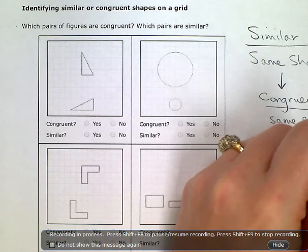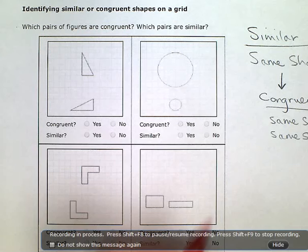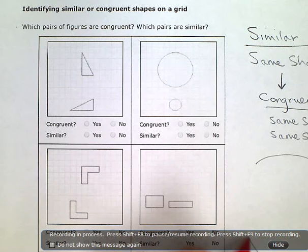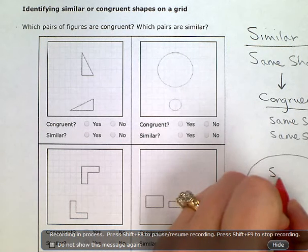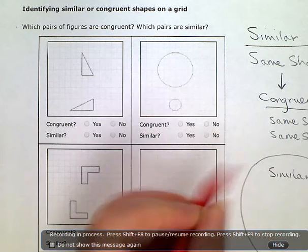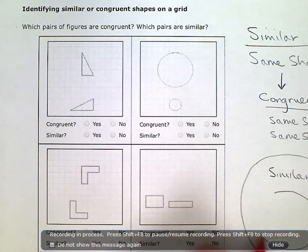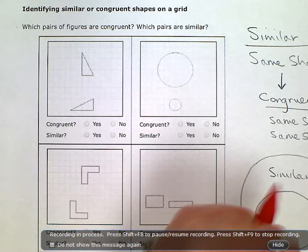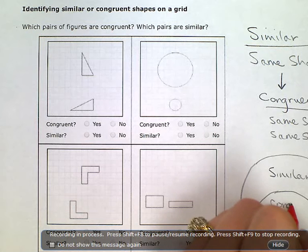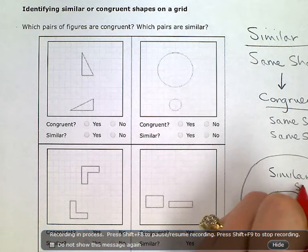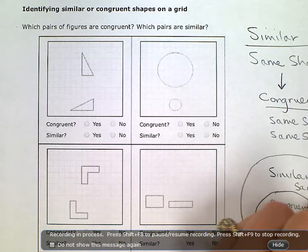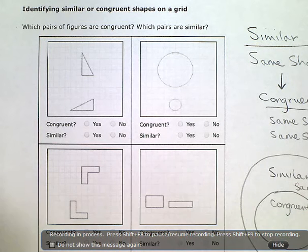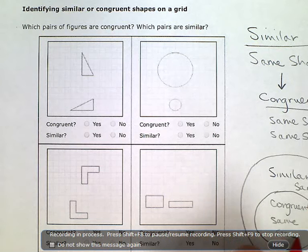So, you might think of it like this. Similar figures and then congruent are kind of a subset of that. These are the same shape and these are the same size as well.